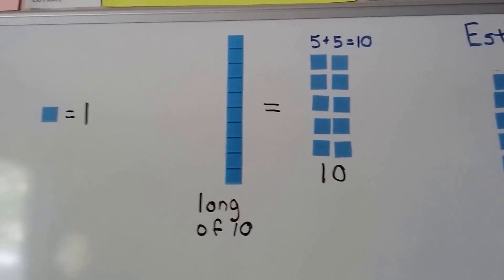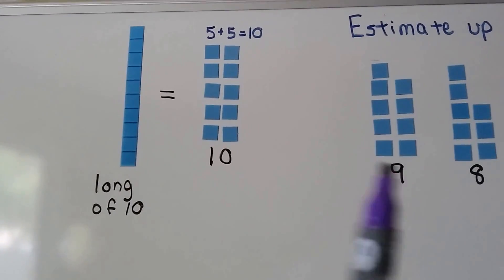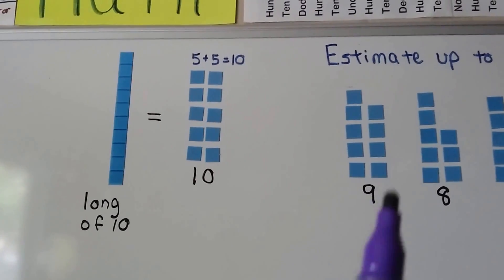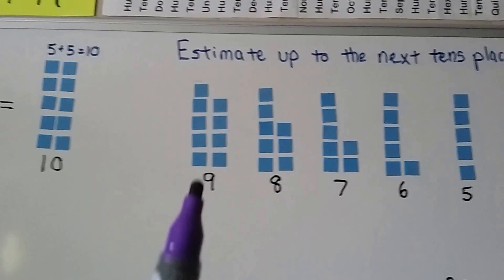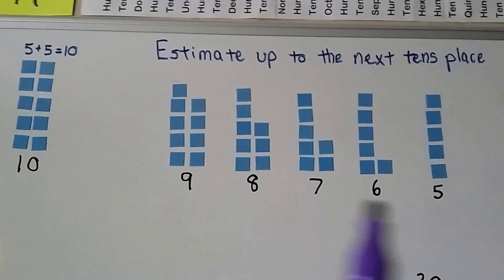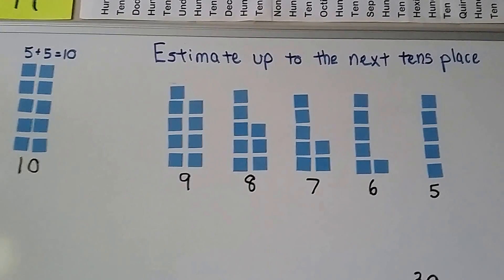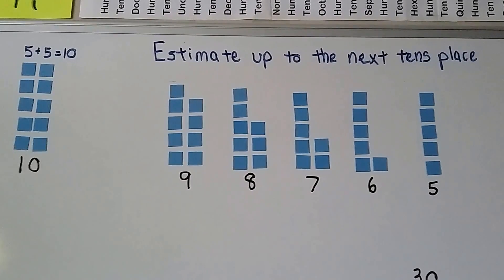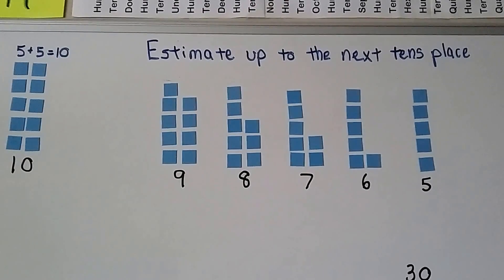When we estimate, we look at the number of tens and ones. If it's got a lot of ones — if it's got 9, 8, 7, 6, or 5 of these single ones — we estimate up to the next tens place. If it's got less than this, we just stay at the same tens place.